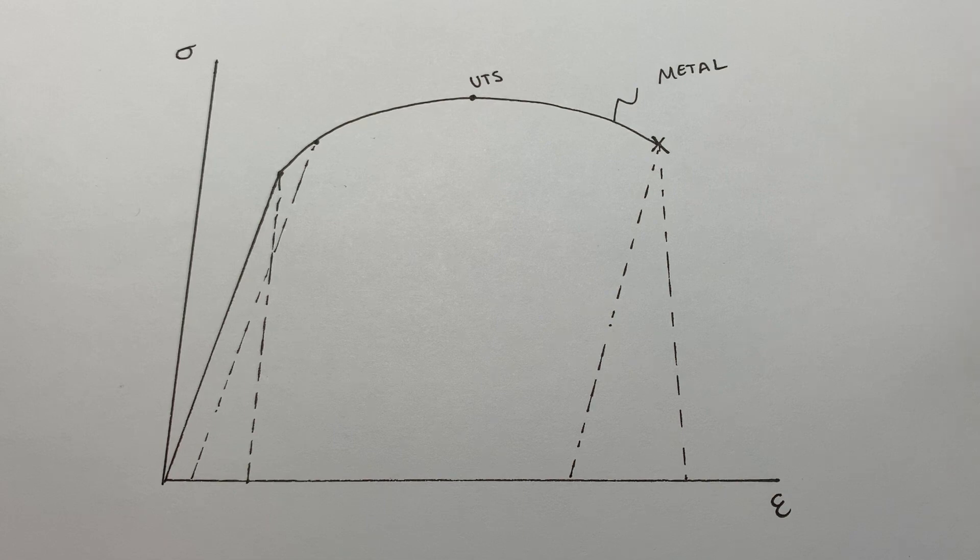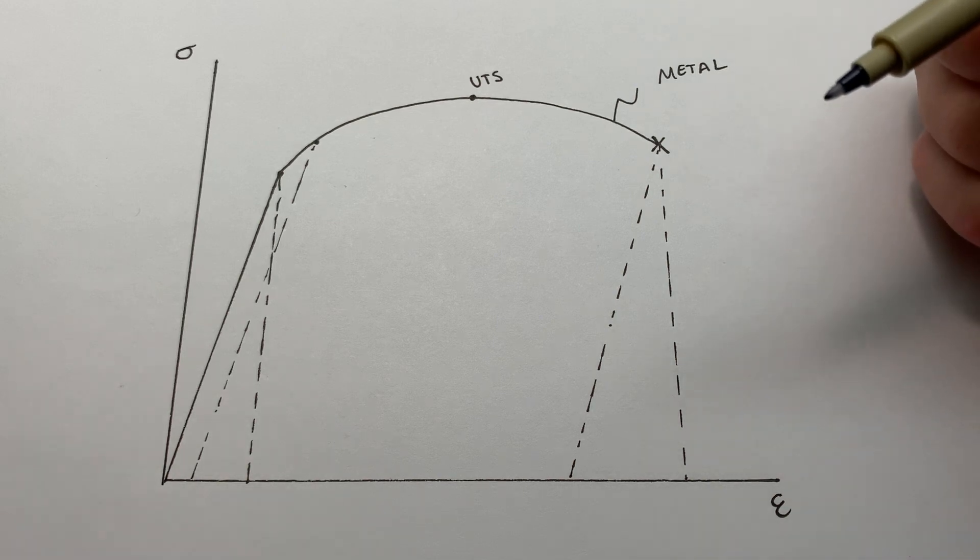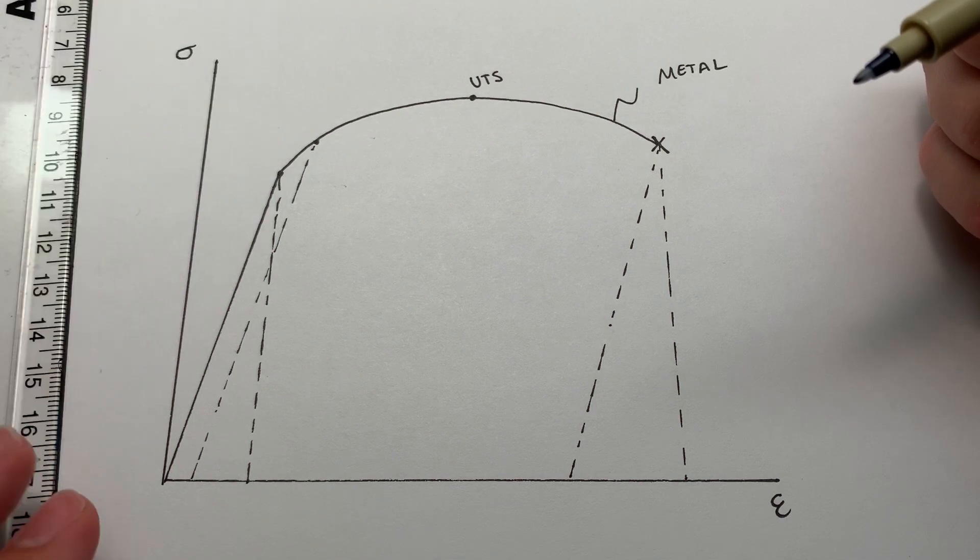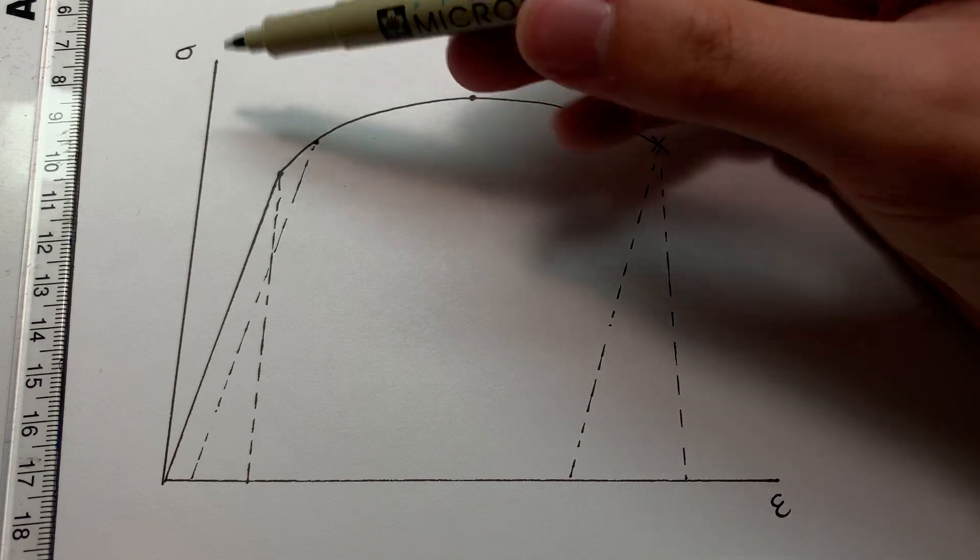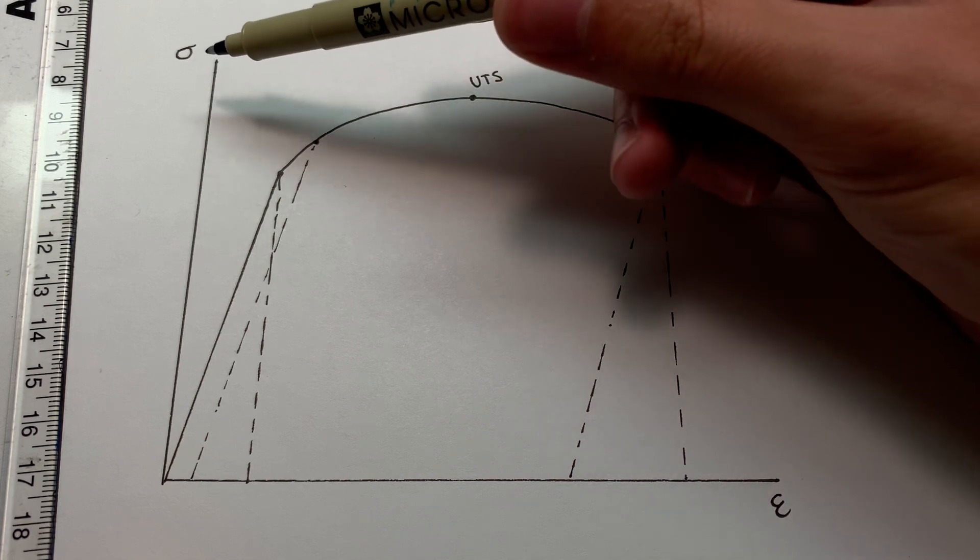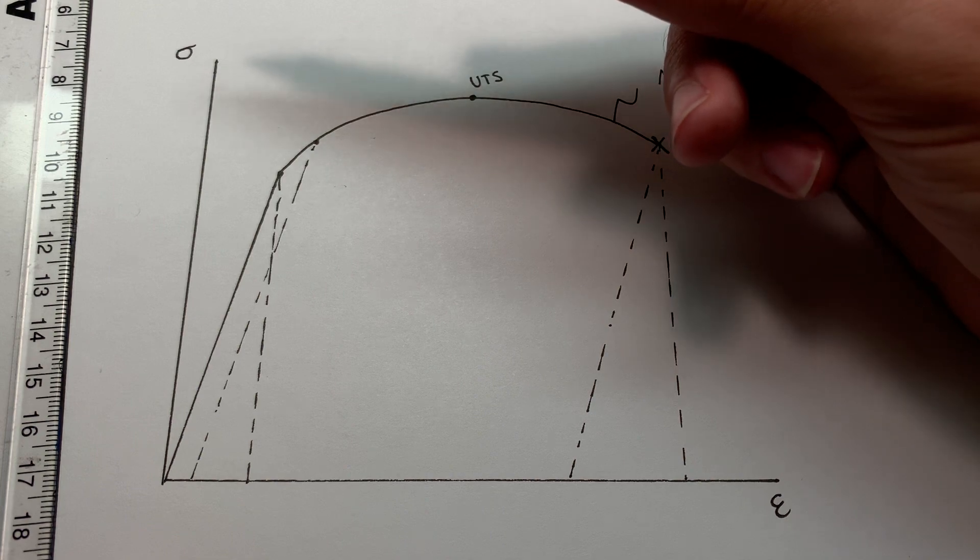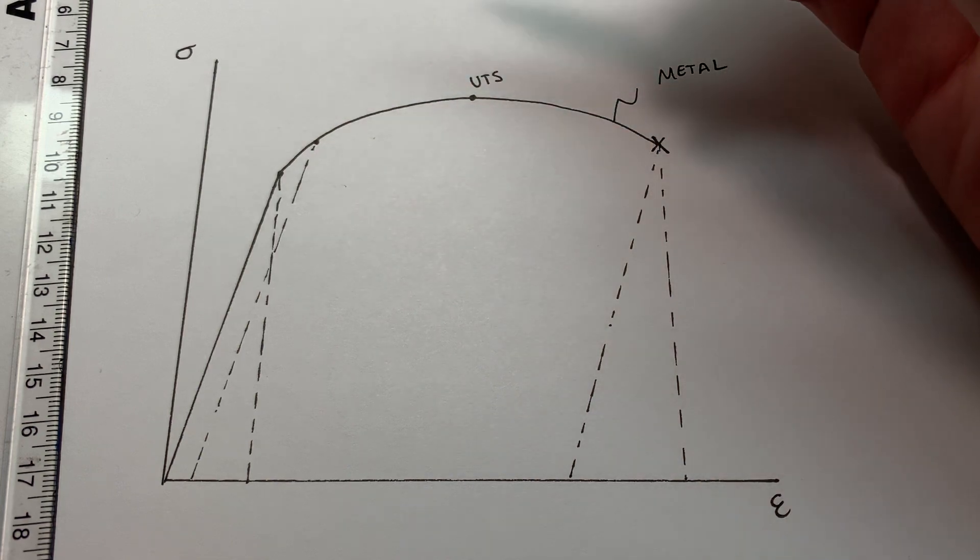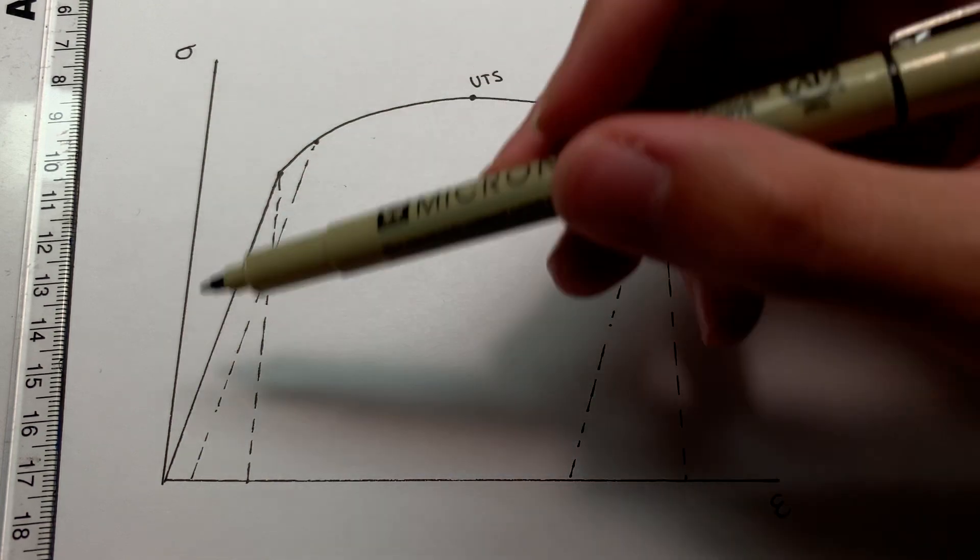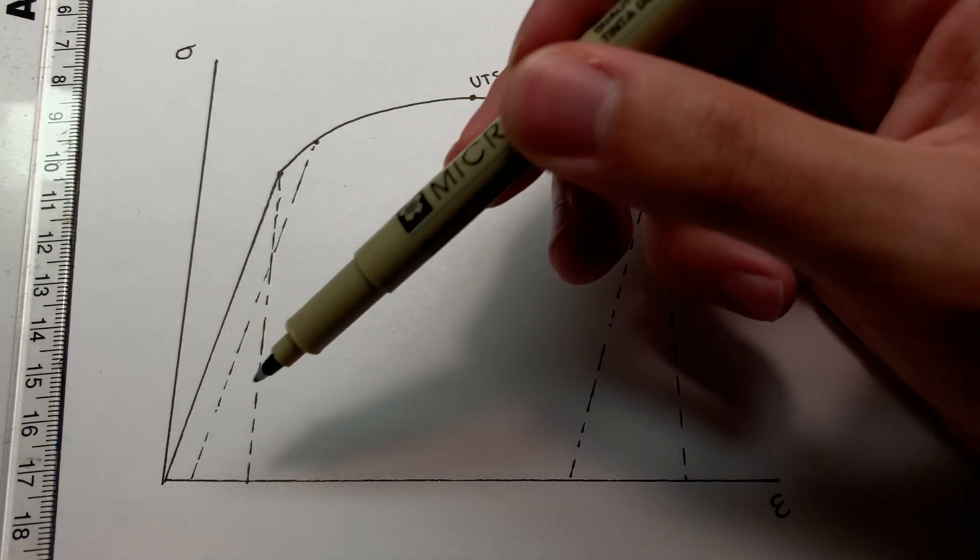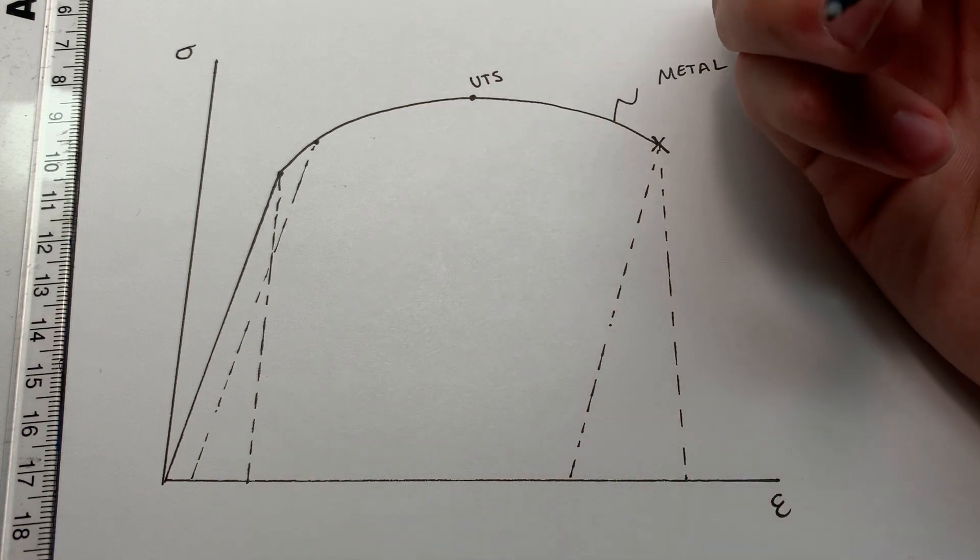So let's compare that to a profile of a rock. And I'll start by drawing it. And I will note here, this for the metal, positive stress was tension. For the rock, I'm going to say it's compression. So think of for this curve, as stress is increasing, that's tension. For the rock, think of it as an increasing compressive load.